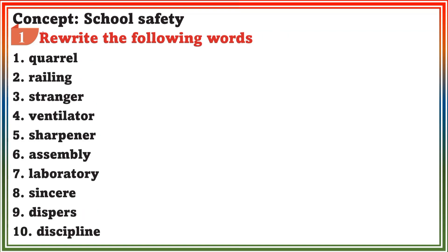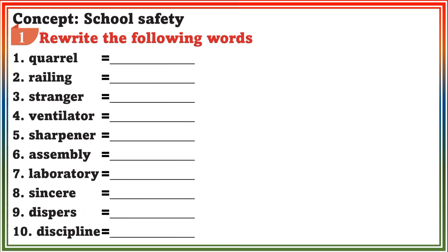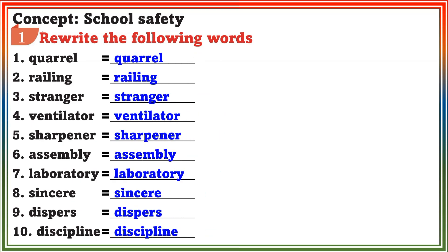Worksheet 3. Concept: School Safety. Section 1: Rewrite the following words — Quarrel, Railing, Stranger, Ventilator, Sharpener, Laboratory, Sincere, Disperse, Discipline.